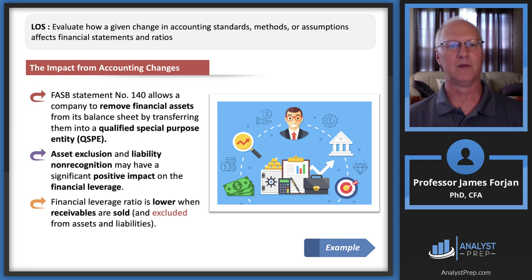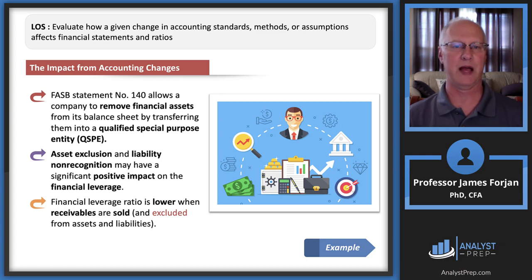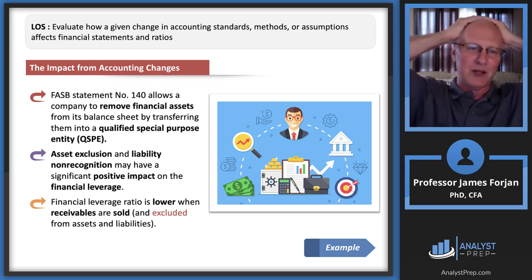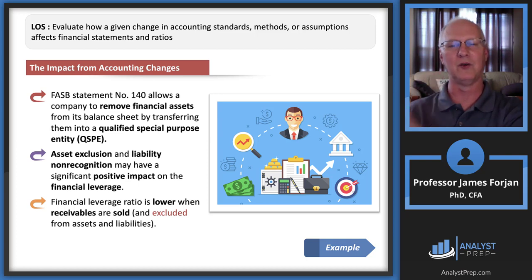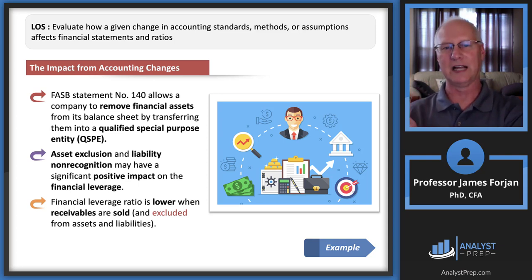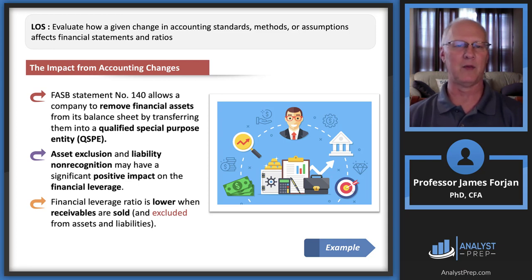How about the impact from accounting changes? FASB 140 allows a company to remove financial assets from its balance sheet by transferring them into a qualified special purpose entity. These things are not inherently bad or dangerous, but what happens is you can put assets into a special purpose vehicle and kind of hide the leverage. Asset exclusion and liability non-recognition — just think Enron.